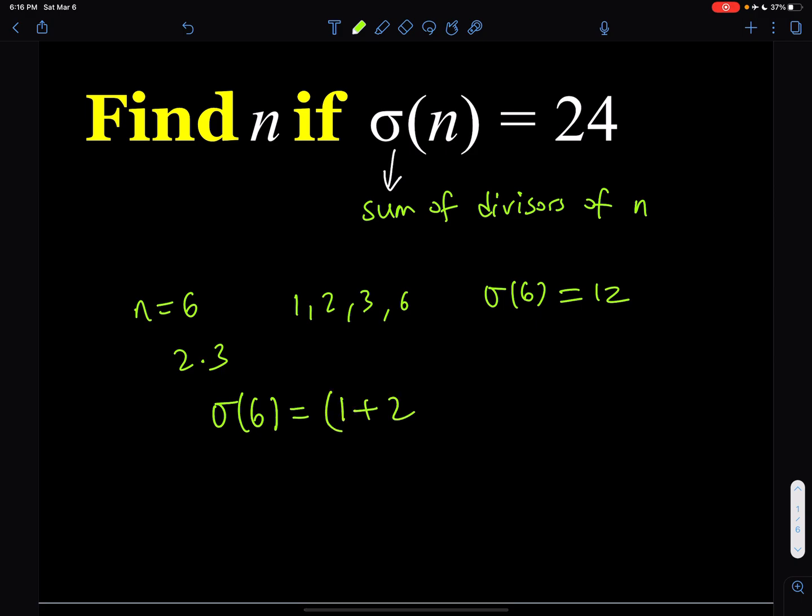1 plus 2, and then 1 plus 3. Now, what happens is when you go ahead and distribute this, you're going to be getting all possible factors, and the sum is going to give you 3 times 4, which is 12, and that's going to be the answer for 6.